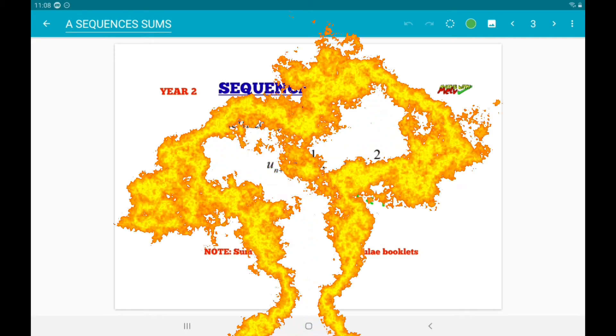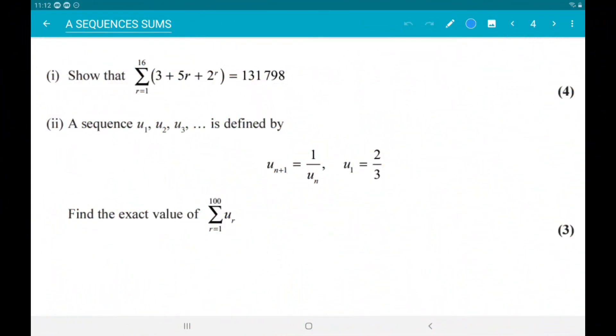And let's go. We want to show that the sum from r equals 1 to 16 of 3 plus 5r plus 2 to the power r equals 131,798. Good times. Alright, so the way that we're going to do that is by splitting the sum into an arithmetic part and a geometric part.